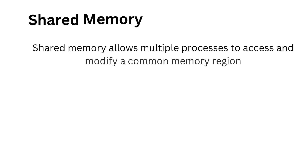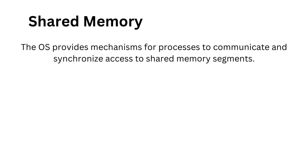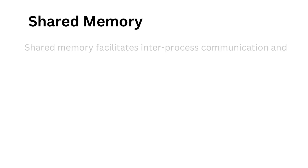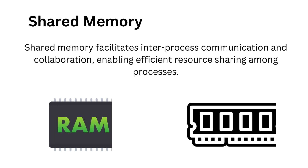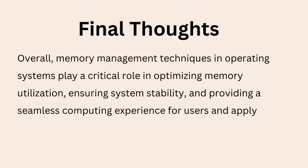Shared memory allows multiple processes to access and modify a common memory region. The OS provides mechanisms for processes to communicate and synchronize access to shared memory segments. Shared memory facilitates inter-process communication and collaboration, enabling efficient resource sharing among processes.